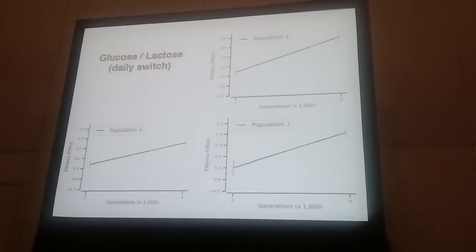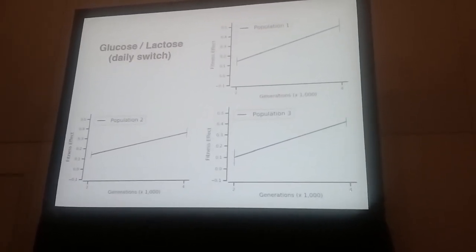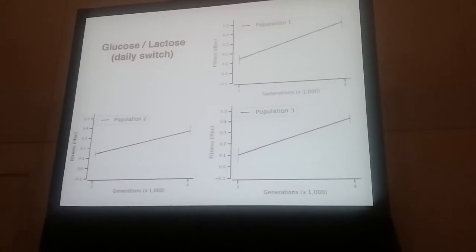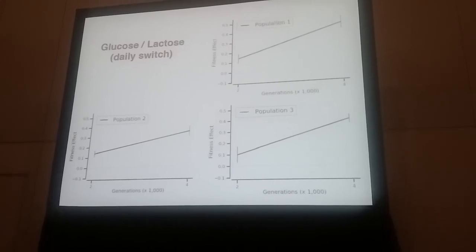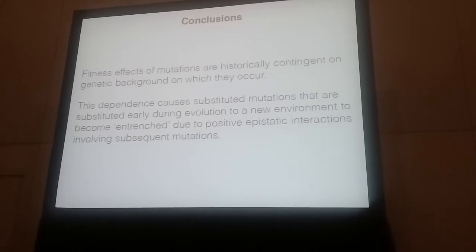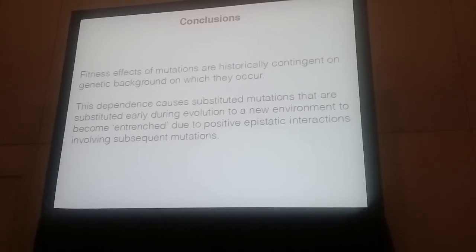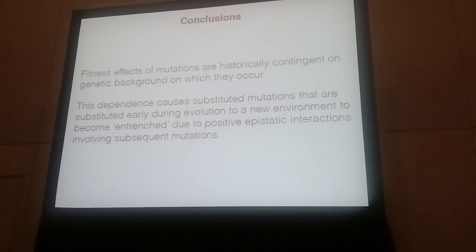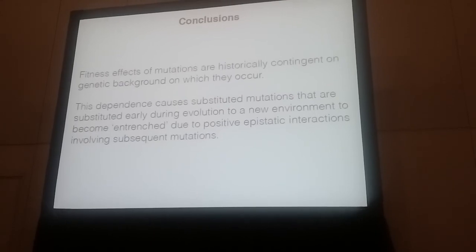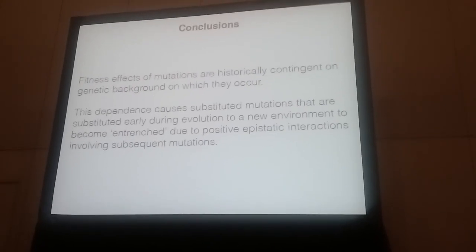Lastly, in the daily switching environment — where every day we switch from glucose to lactose — I only have data up to 4,000 generations for three populations, but you can see a clear increase in the effect of that mutation over time. Overall, this seems to indicate that the subsequent mutations are contingent upon that lac I mutation for their beneficial effects, and this dependence ends up entrenching the initial early mutation into the genetic background, such that when you revert it over time, the fitness cost increases.